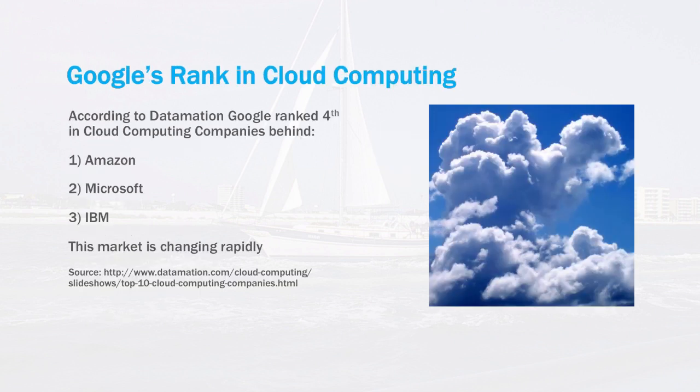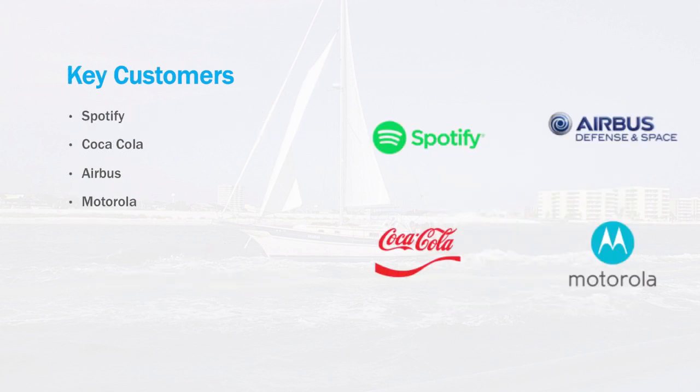Although Google is one of the largest tech companies in the world, their cloud platform is currently ranked fourth in the market behind Amazon, Microsoft, and IBM. This market is rapidly changing and highly competitive, and these rankings could be subject to change over the next few years as this market evolves. If you look at Google's documentation on their website, you'll note that they have a number of high-profile customers that include Spotify, Coca-Cola, Airbus, and Motorola. As Google begins to gain market share, their list of marquee customers will continue to grow.